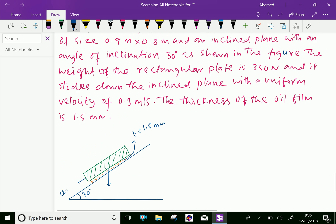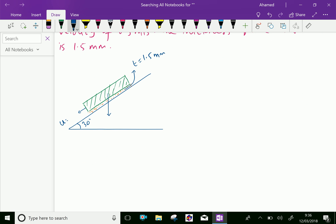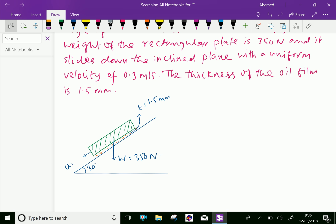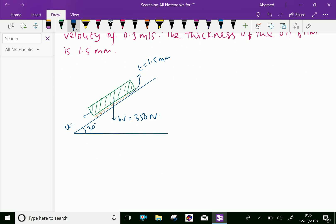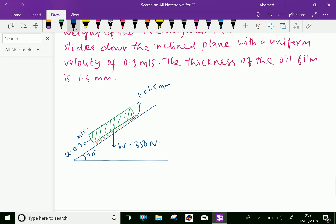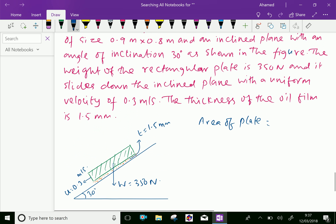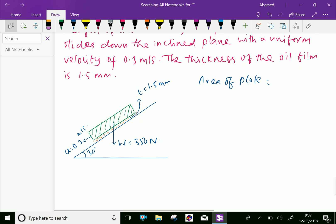The weight of the plate is 350 Newton, that is W equals 350 Newton, and the velocity of the plate sliding down is 0.3 meter per second, and the oil thickness is 1.5 mm. Now let us write the given things. Area of the plate equals 0.9 into 0.8, which is 0.72 meter square.